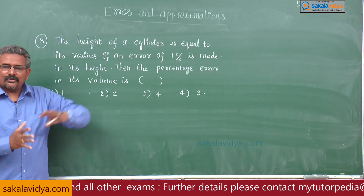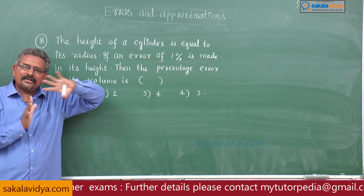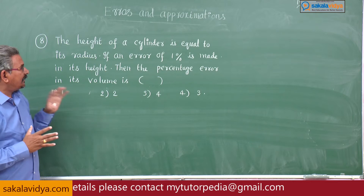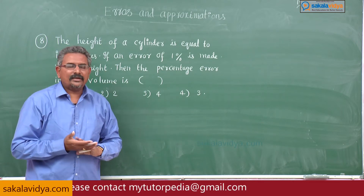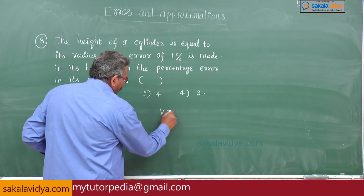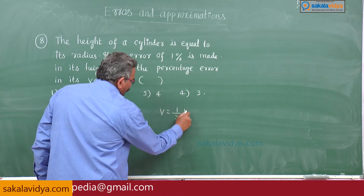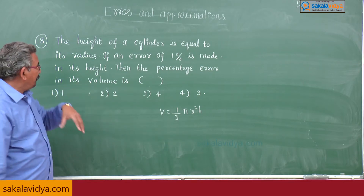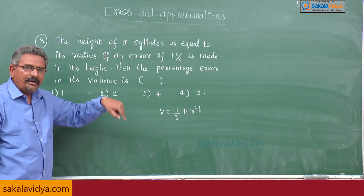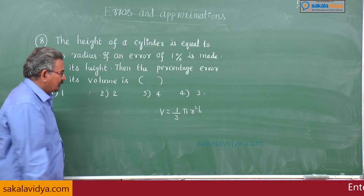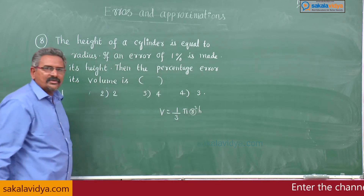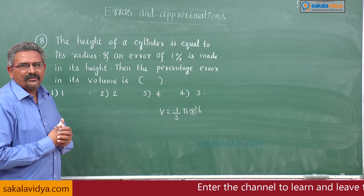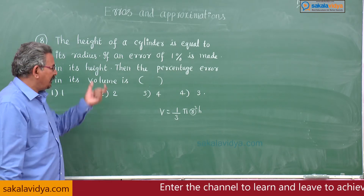Let us devise a plan to solve this problem. The volume of a cylinder is given by v equals pi r squared h — it is in two variables. With the help of the given condition, this can be made into a single variable. The r value is replaced by h, giving h squared into h, which is h cubed. There is only one twist in this problem.